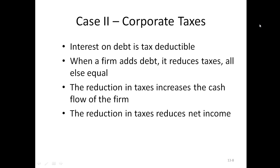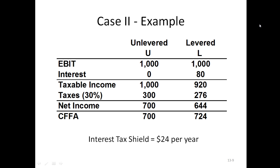So let's take a look at an example. Here we have the case of the unlevered firm, we'll call it U, and a levered firm we'll call it L. They both have earnings before interest and taxes of $1,000. In the unlevered case there's no interest, so taxable income is EBIT, the full $1,000. If we assume the tax rate is 30%, there's $300 in taxes, so net income is $700.